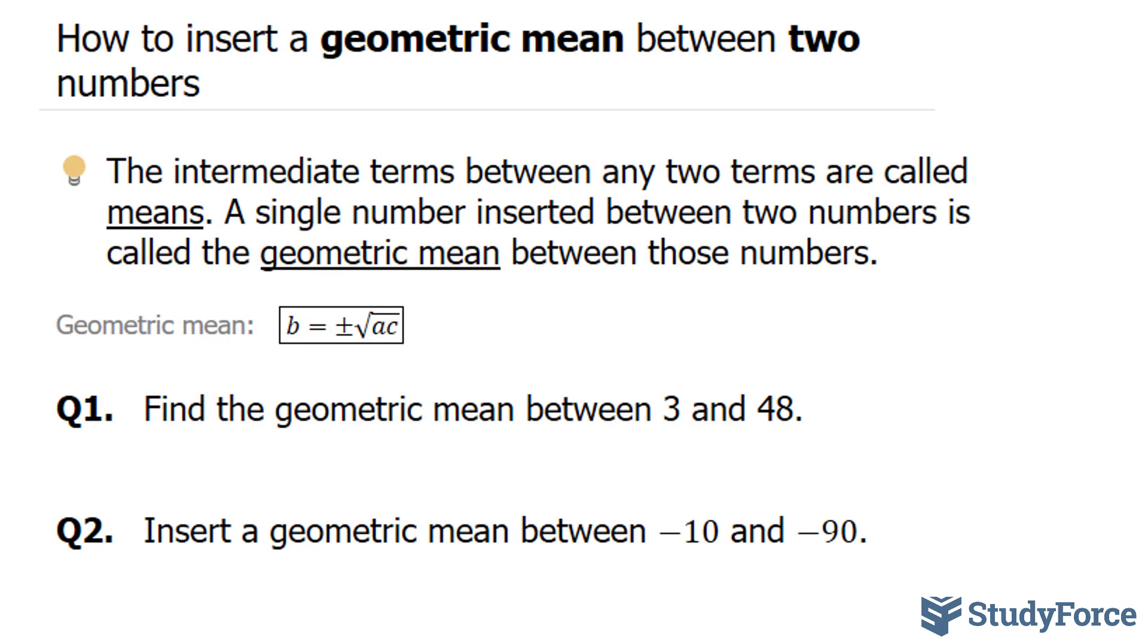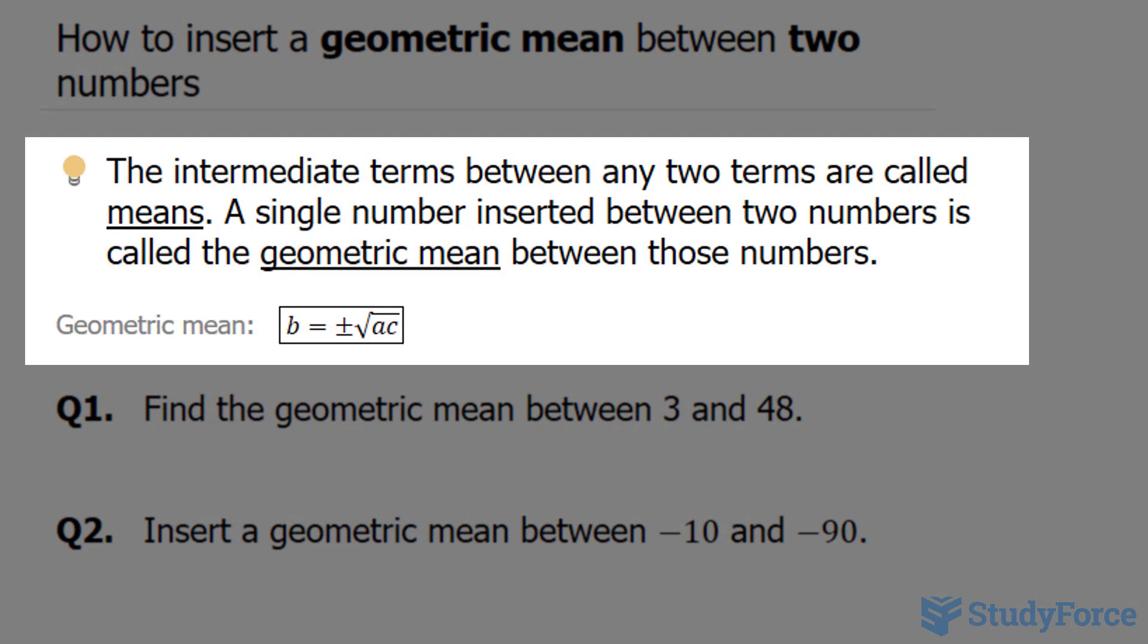In this video, I'll show you how to insert a geometric mean between two numbers. The intermediate terms between any two numbers are called means. A single number inserted between two numbers is called the geometric mean between those numbers.